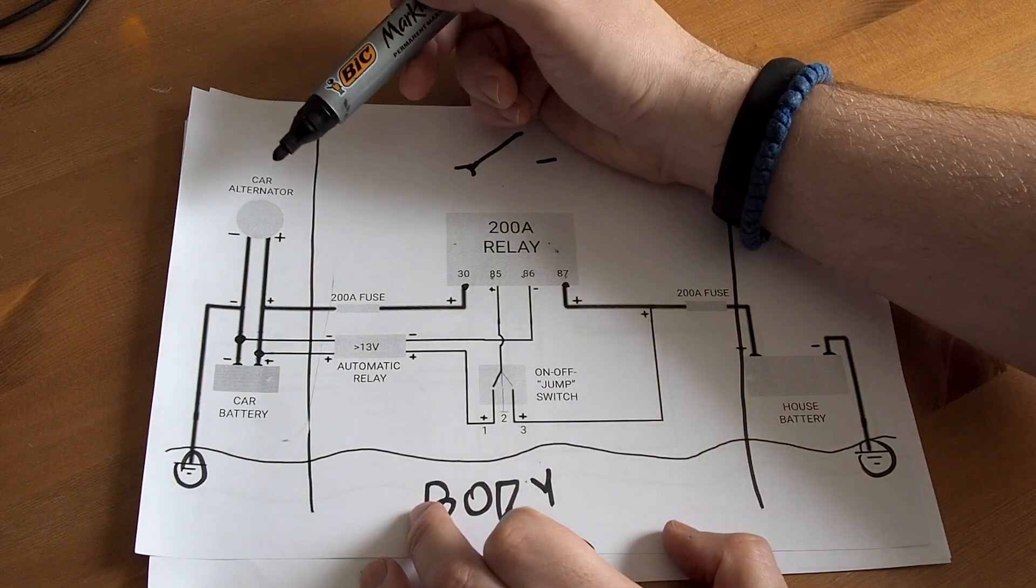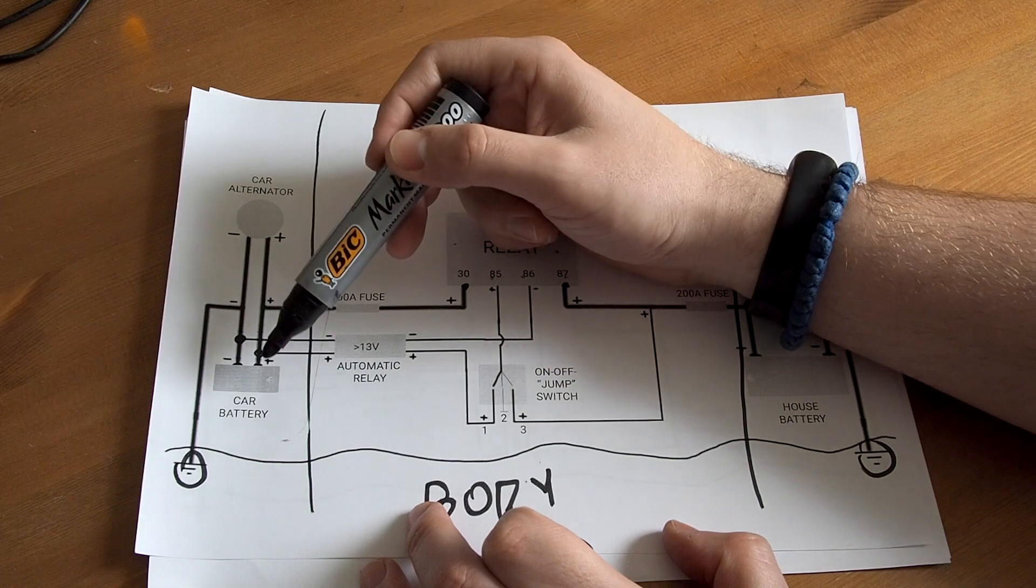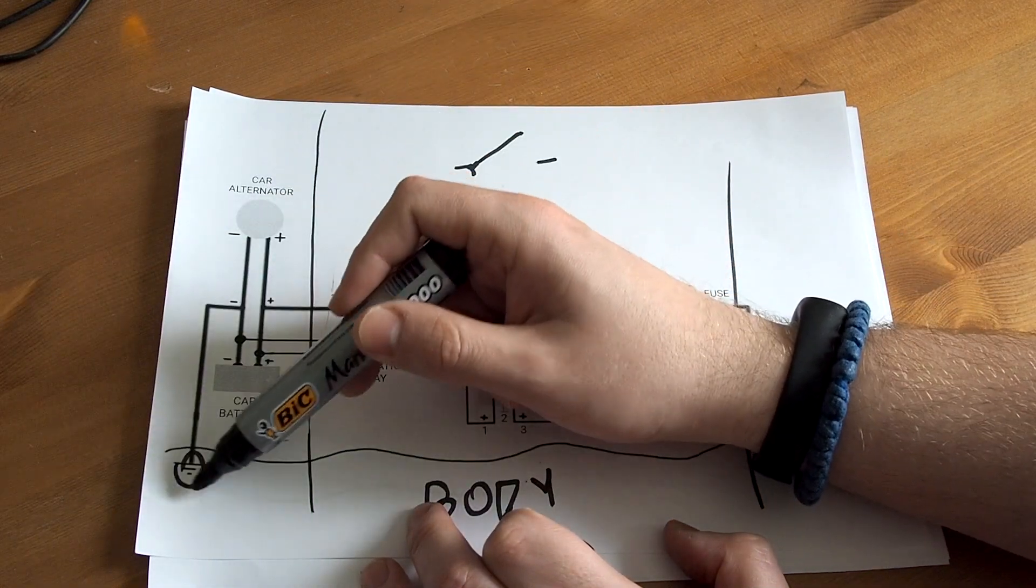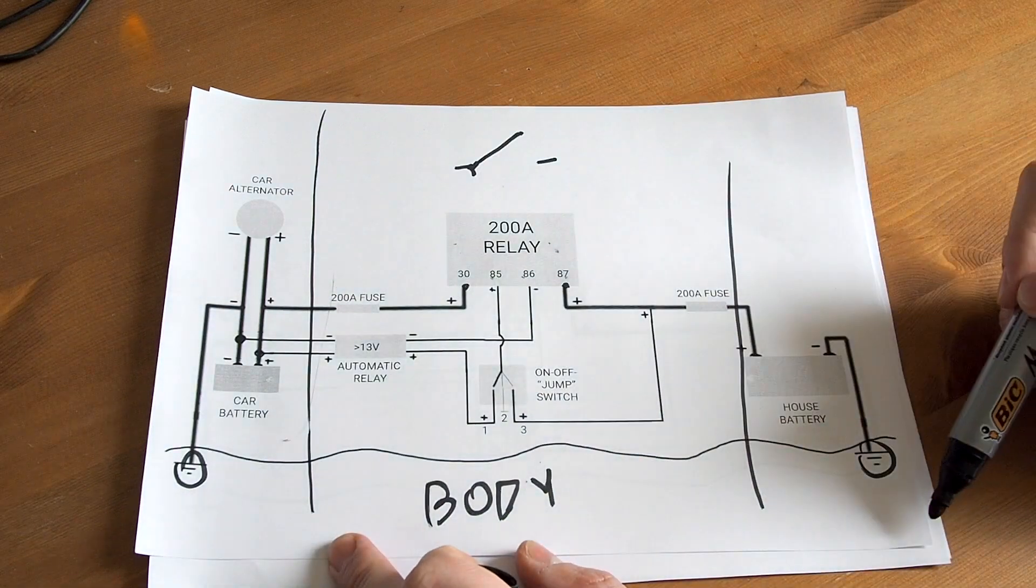On the left side we have your car alternator and your car battery, which you already have in your car. The negative wire connects to the ground, which is the body of your car.